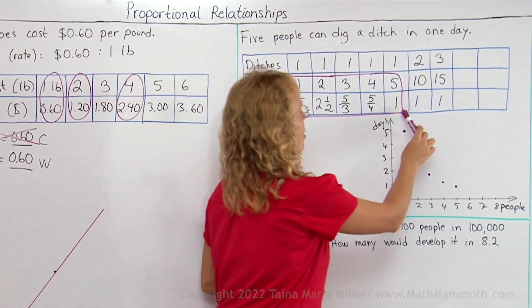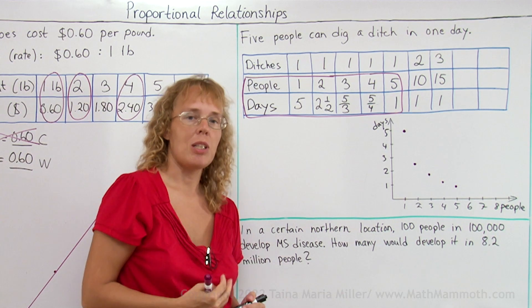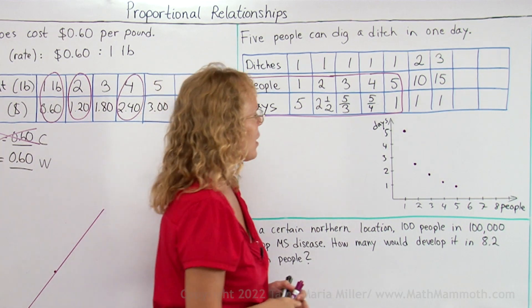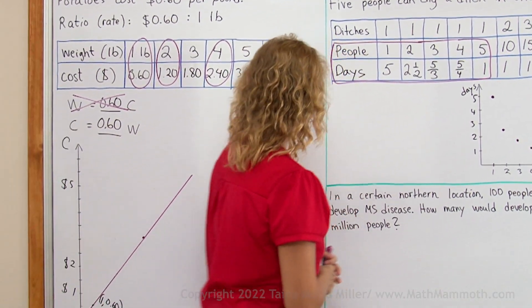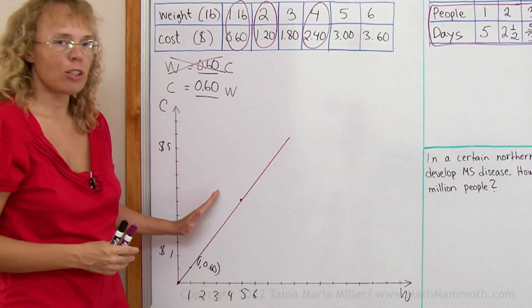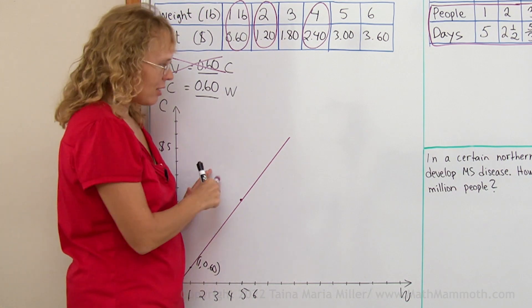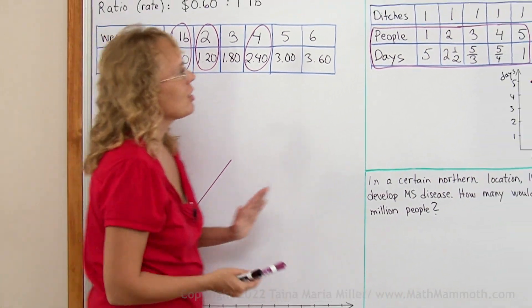This is an example of what we call inverse variation. And when it is in proportion, we call it direct variation.